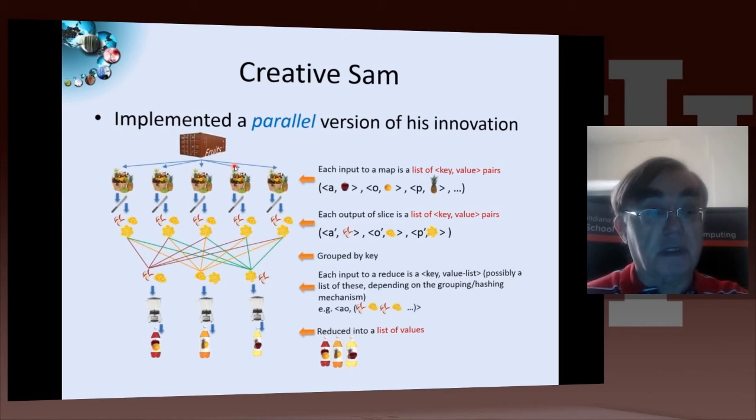So we have the fruits. We have multiple baskets of fruits, and the key is the type of fruit, and the value is the particular fruit, so the particular apple or orange or pineapple. And then the first map is a slicing operation which converts the apples into a slightly different key, then we sliced apple, sliced orange, and sliced pineapple. And that's shown here.